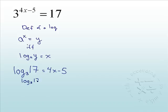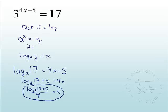You cannot combine the 17 and the 5. Just leave that alone. If you want to, you can put parentheses around the log base 3 of 17. To finish it off, we will divide by 4. So that gives us log base 3 of 17 plus 5 all over 4. Fantastic!